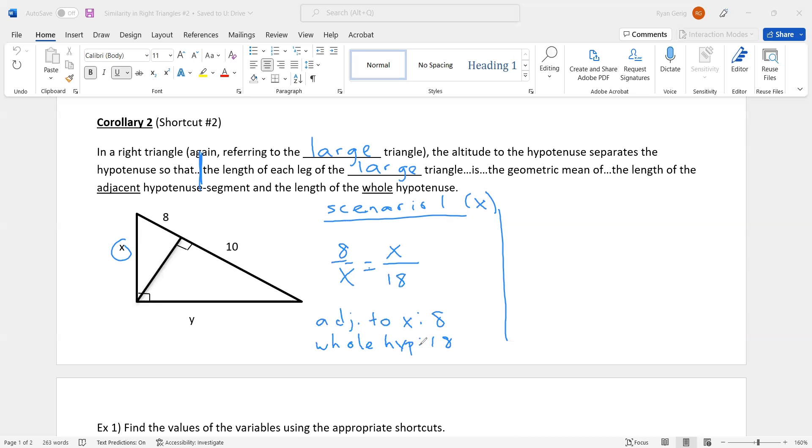So then you get X squared equals 144. Once you get it set up, it should be pretty straightforward I'm hoping by now. And square root, you get X equals 12. Again, don't need plus or minus because we're talking about side lengths here.